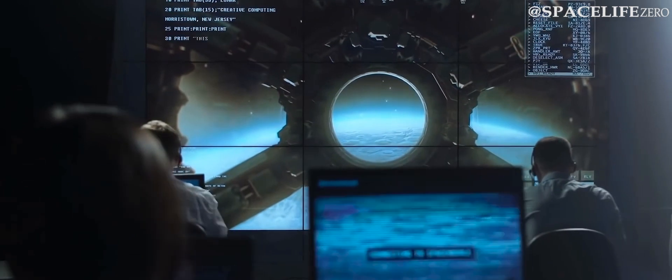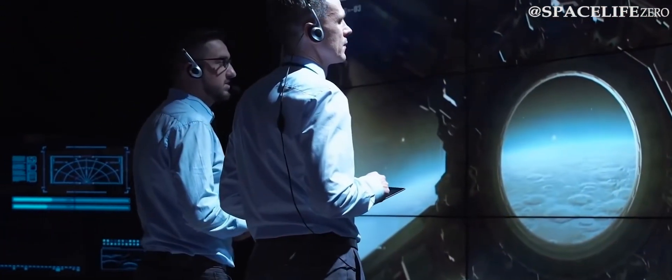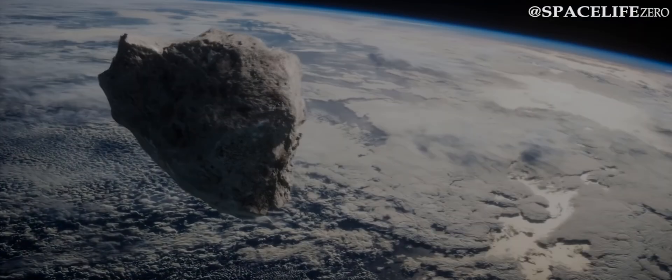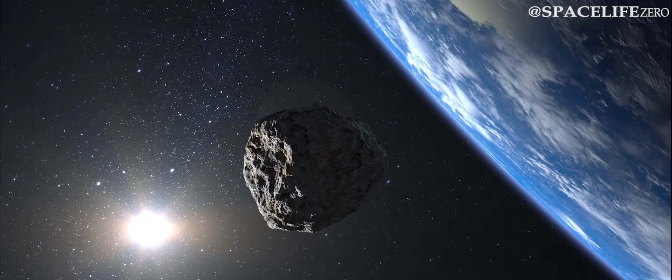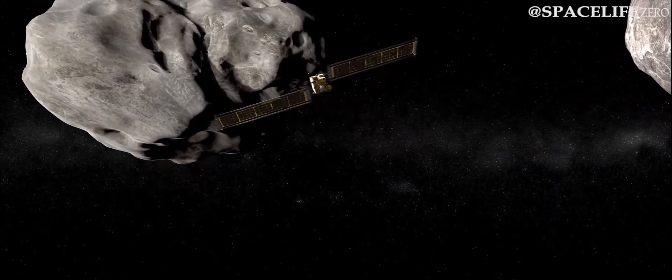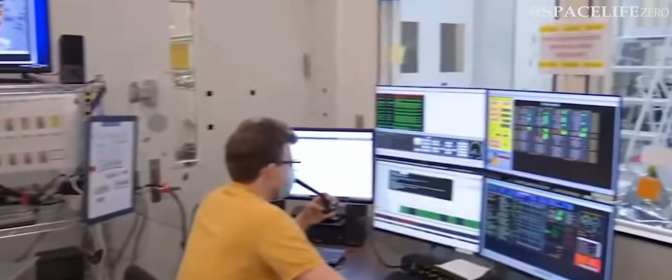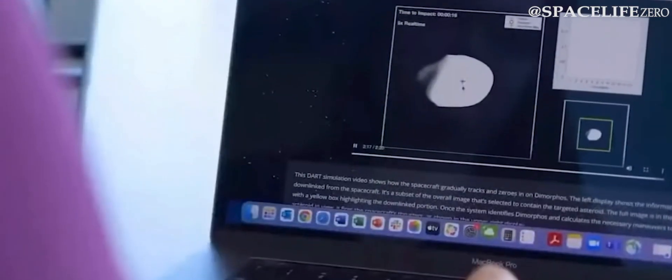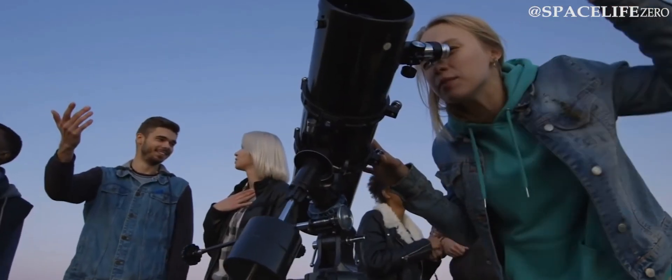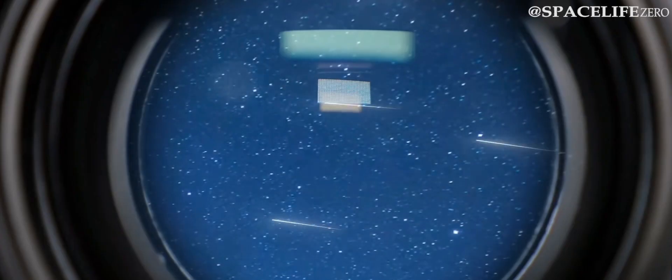NASA says none of the asteroids discussed above possess any kind of threat to our planet. They will simply pass by the planet. However, it is still important to track their movement, for which NASA has deployed several Earth and sky based technologies like telescopes, satellites, and many more in space.